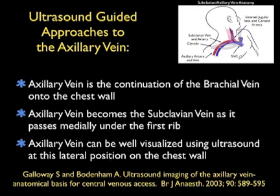Why would you want to use ultrasound to cannulate the axillary vein? The axillary vein is an alternative approach to cannulation of the subclavian vein on the chest wall. It is a continuation of the brachial vein onto the chest wall and becomes the subclavian vein as it passes medially under the first rib. The axillary vein can be well visualized using ultrasound at this lateral position, in contrast to the subclavian vein where the bony clavicle makes imaging of the infraclavicular portion difficult. So in effect, this is a lateral puncture of the subclavian vein — really into the axillary vein, if you're going to use the right anatomical terminology.